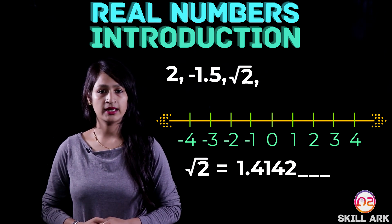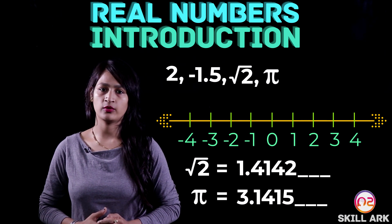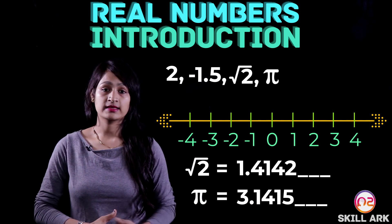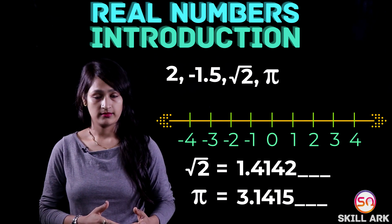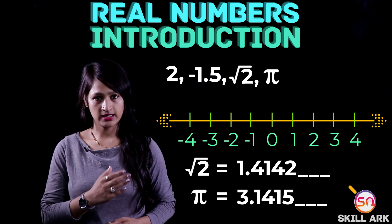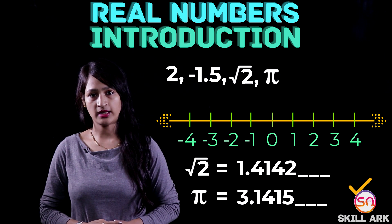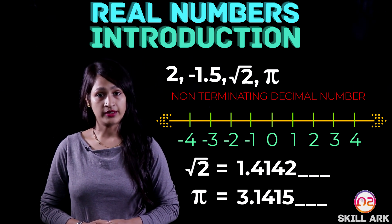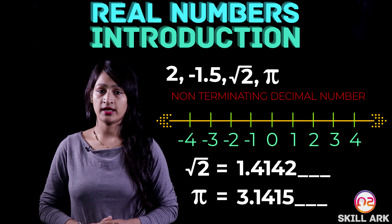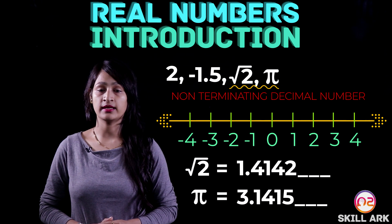Let's take another example: pi. Pi is 3.1415... and so on, continuing without end. We can also plot pi on the number line, which means pi is also a real number. Pi is also a non-terminating decimal number. So both root 2 and pi are non-terminating decimal numbers.